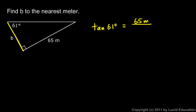So tangent of 61 degrees equals 65 meters over B. Rearrange that algebraically — you should be able to do that in your head — and B is going to be 65 meters over the tangent of 61 degrees.